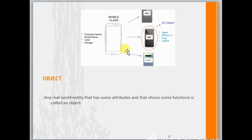A mobile phone can be used for multimedia purposes, clicking pictures, or calling. So these are the functions. Any real world entity which has some attributes and which shows some function is called an object. In computer language also, any entity which has some data as well as some functions is called an object.